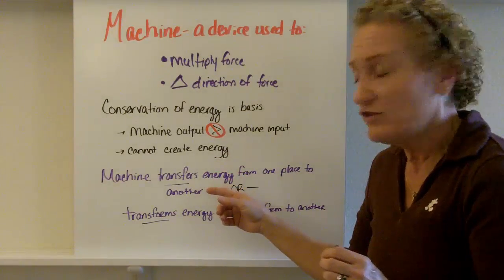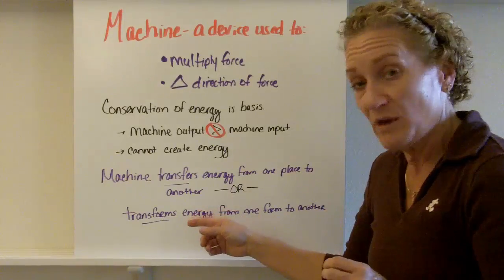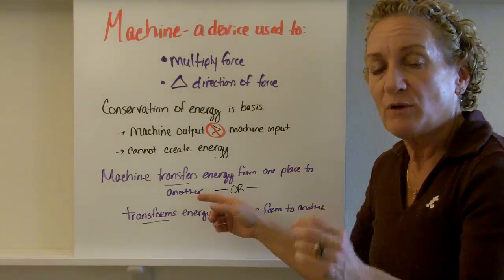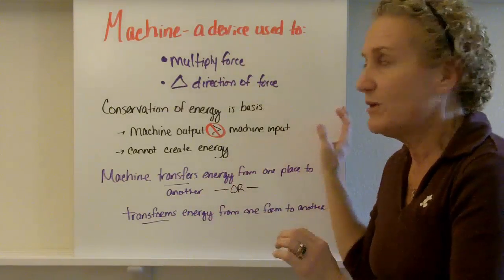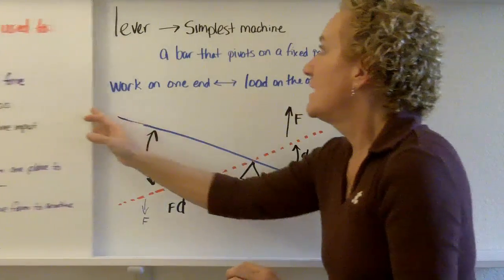The machine can transfer energy. It can transform energy, so it can move energy from one place to another, or it can change it from one type to another, but it can't create energy.